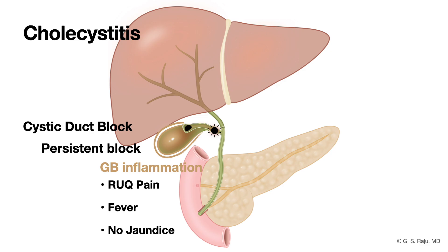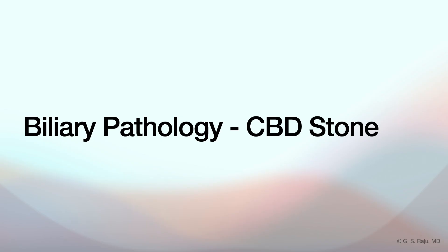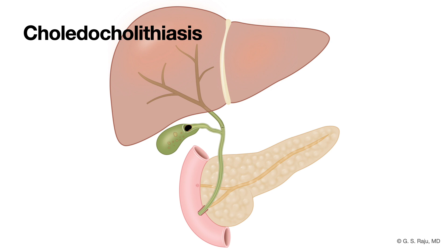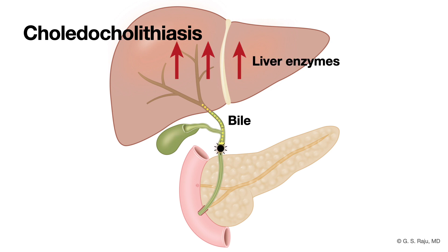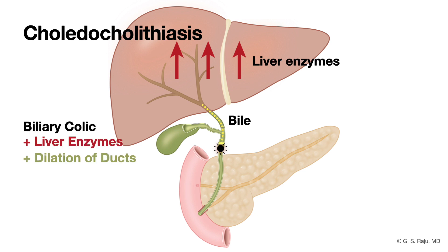Choledocholithiasis means a stone in the common bile duct. Now you have a blockage after the point where bile from the liver joins in, so liver drainage is affected. Bile backs up into the liver, causing elevated liver enzymes — elevated LFTs. Patients might still have biliary colic-type pain. On imaging — ultrasound, MRI, or during the ERCP — the bile duct above the blockage will often look dilated, widened, due to the back pressure. Sometimes you can even see the stone itself. Dilated duct and elevated liver enzymes are your big clues.